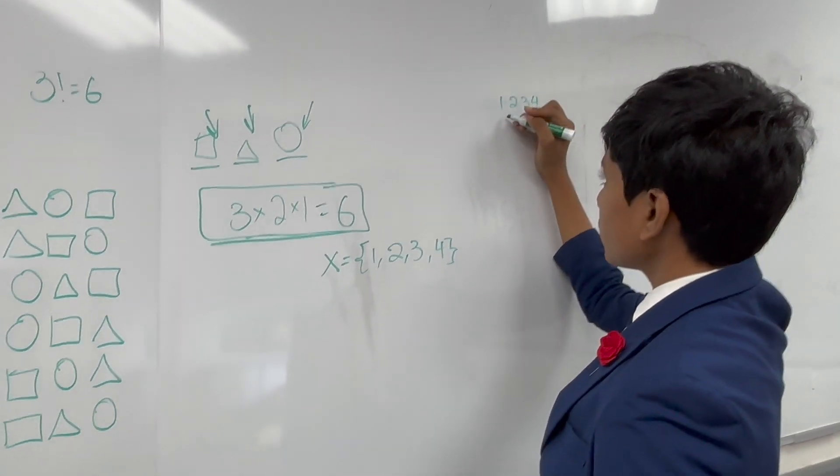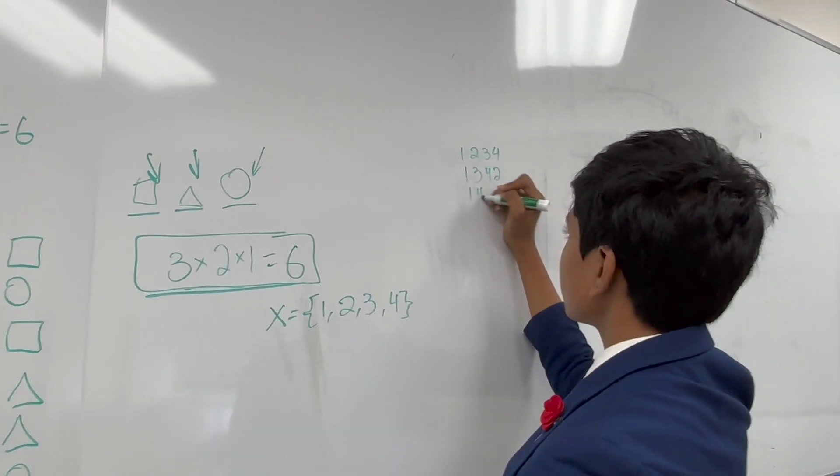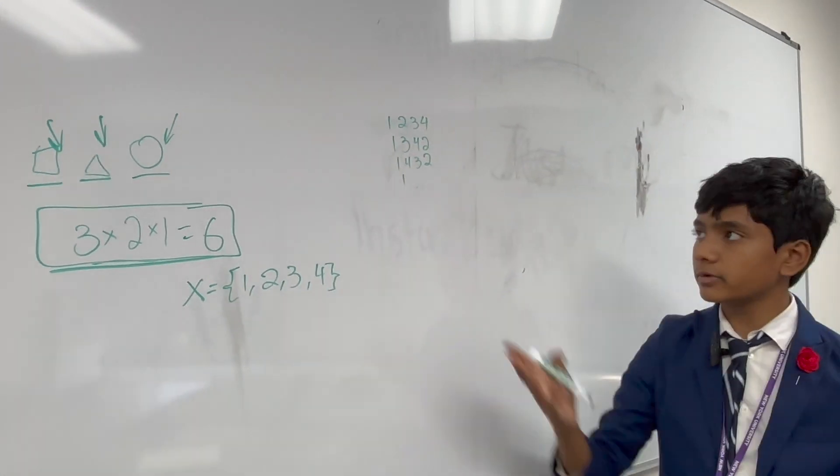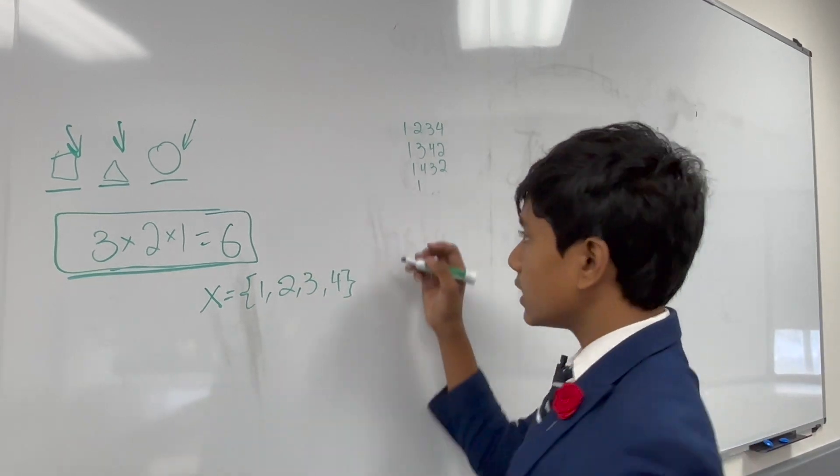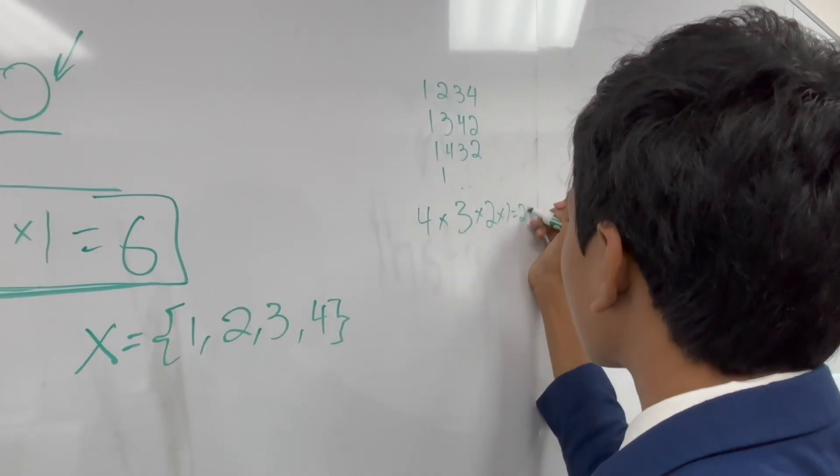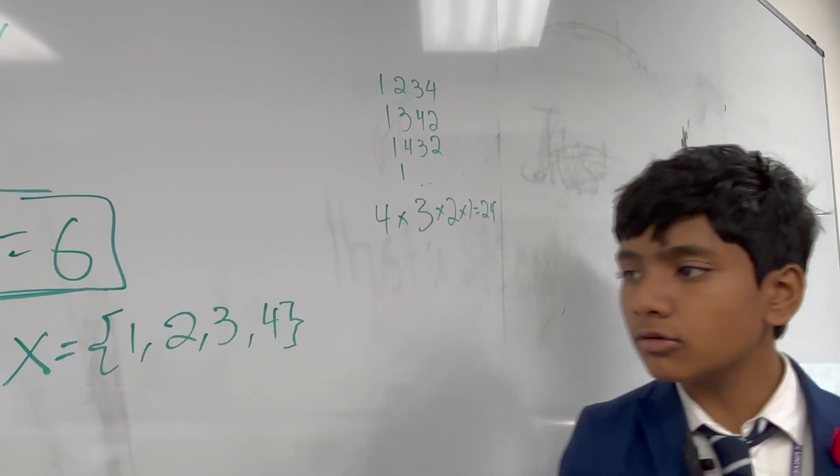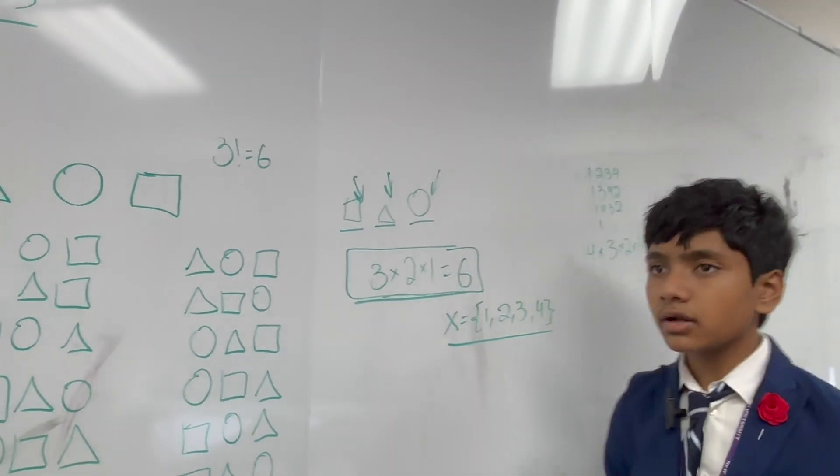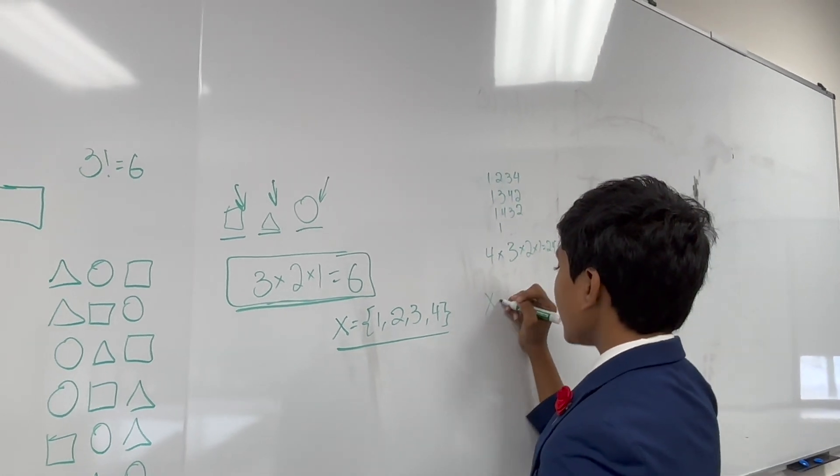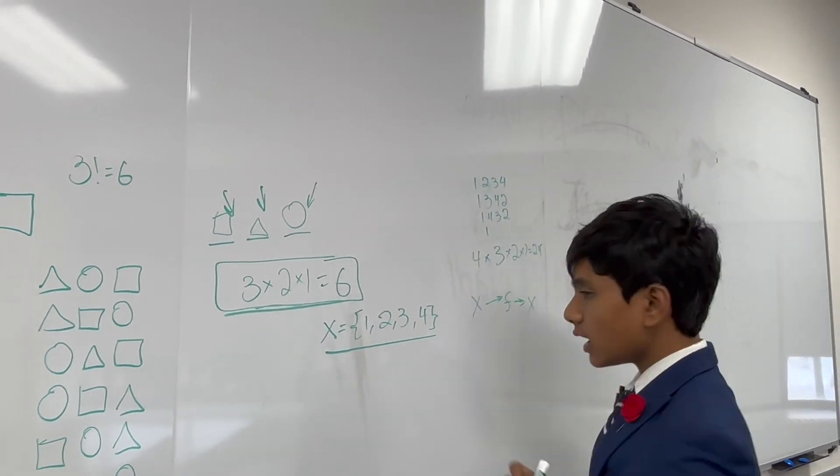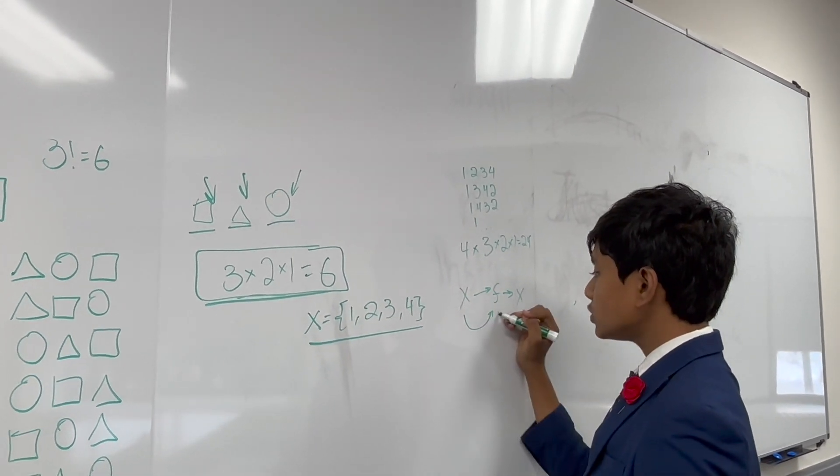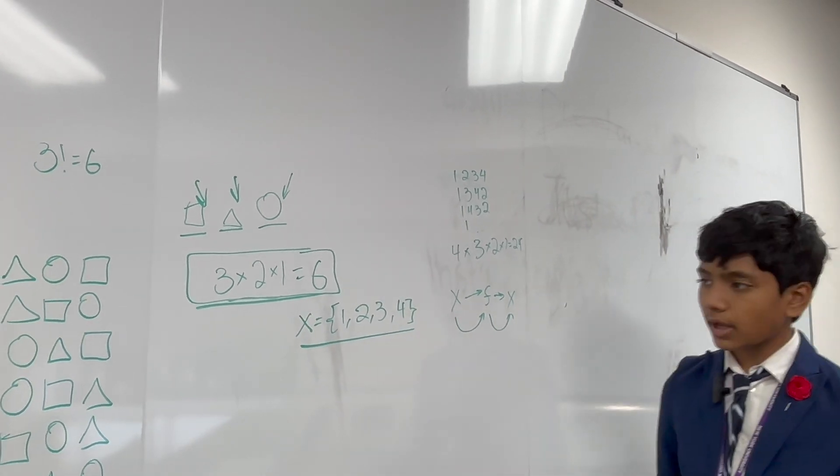And, of course, as we all know, there are lots of different permutations of this. There's 1234. There's 1342. There's 1432. I mean, there are six different possible permutations for starting with one alone. All in all, there are 4 times 3 times 2 times 1 is 24 possible permutations. So then, all we want to do is, we want to create a function that goes from x back to itself. In other words, it takes a variable from x and then converts it to an output that's inside x.